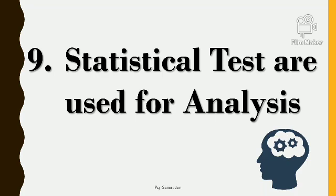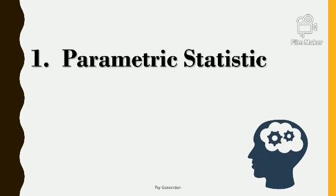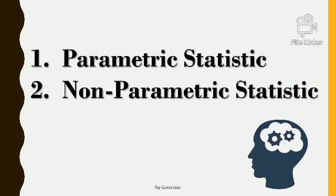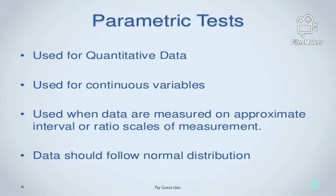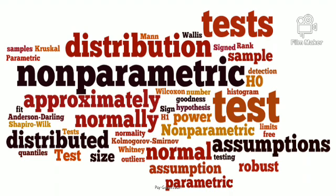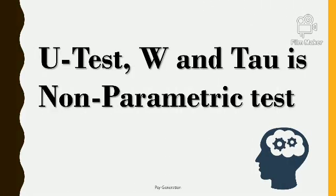Ninth and last, statistical tests are used for analysis. There are two types of statistical tests. First is parametric statistics — parametric statistics mein population ke baare mein kuch fixed assumptions hoti hain, kuch fixed maanyatayen hoti hain. For example, T-test and F-test are parametric tests. Second is non-parametric test — non-parametric test is tarah ki assumptions se free hota hai, that is why it is also called a distribution-free test. For example, U-test, W-test, and Tau are non-parametric tests.